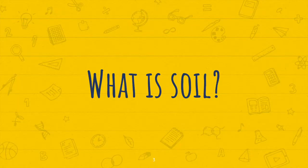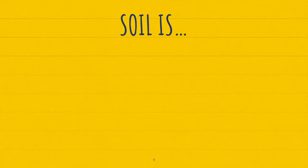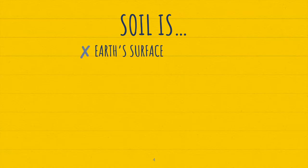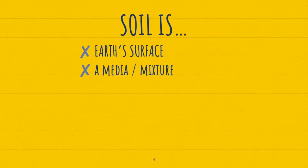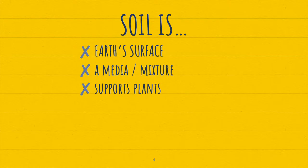First and foremost, let's define what is soil. You may say that soil is simply just earth's surface — it's the ground that we walk on. You could also say that soil is a media or a mixture composed of many things forming into one unit. You could also say that soil supports plants physically and chemically, so it provides area for plant roots to hold steady and contains nutrients that plants need to grow.